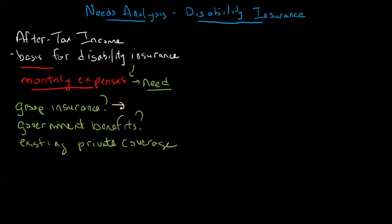With group insurance, we have to make some assumptions as to the likelihood of it actually providing the benefit we'd like it to provide. That's going to depend on factors like the likelihood of staying employed, and the degree to which we trust the any-occupation definition of disability that kicks in usually after two years. Those kinds of things — but the benefit is usually pretty straightforward.